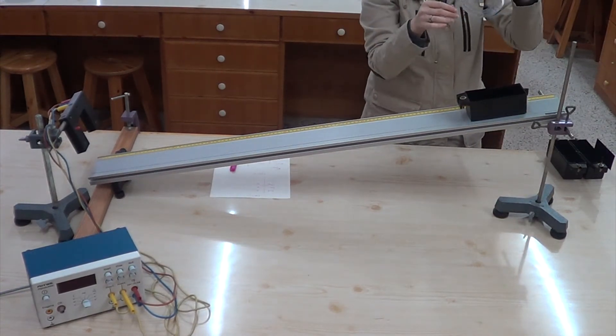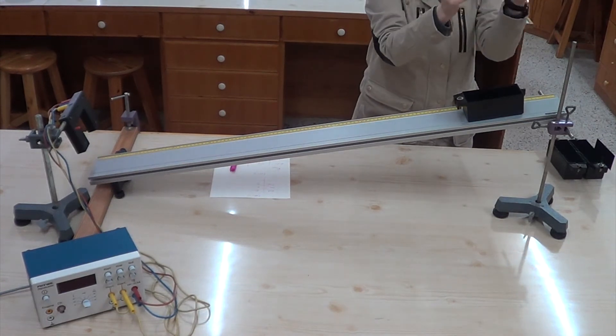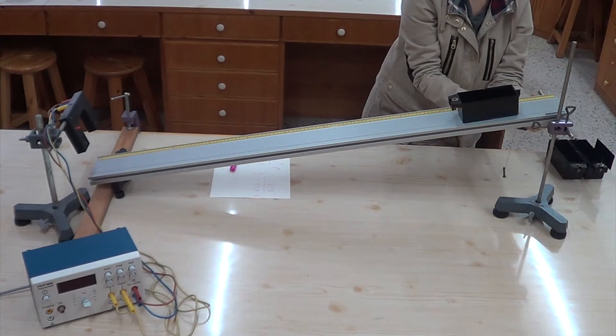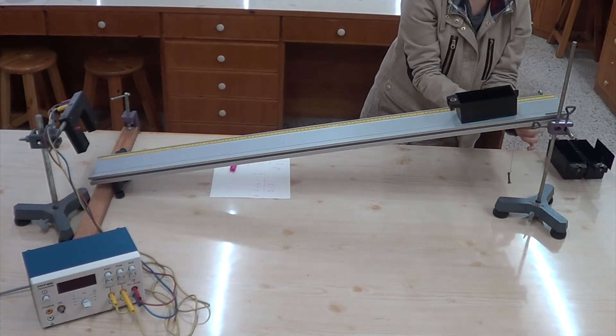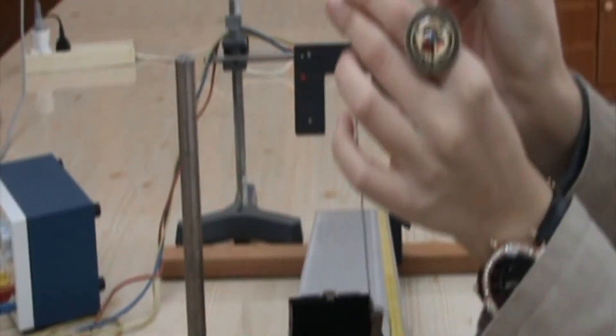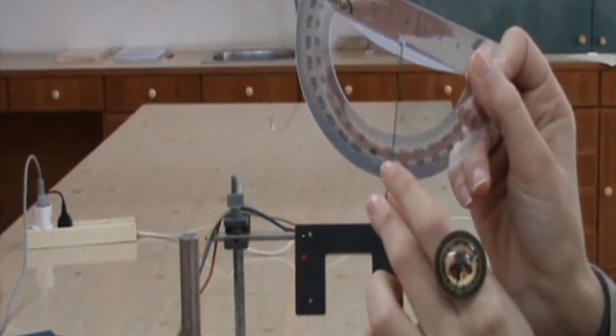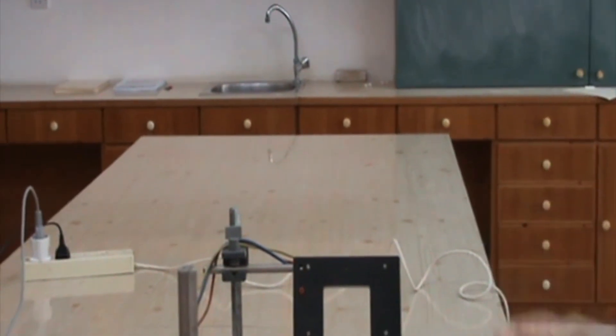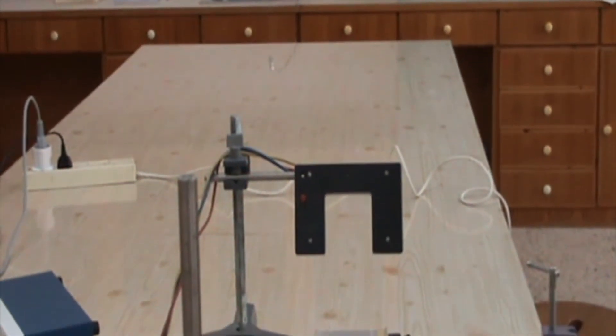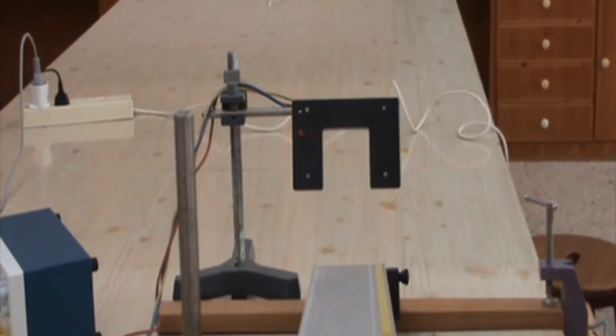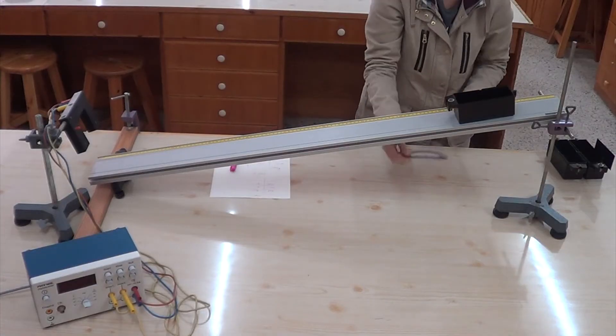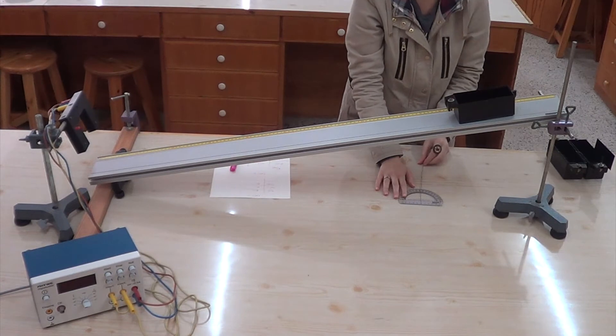Measure the angle by using a protractor and make sure that you hold it in parallel with the inclined plane while doing so. You must subtract the value aligned with the string from 90 degrees and this will give you the critical angle. Record the theta critical into your logbook.